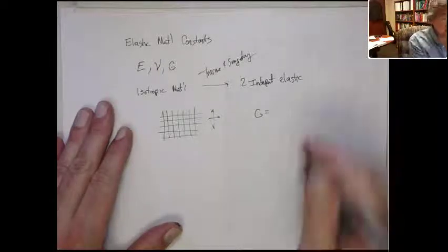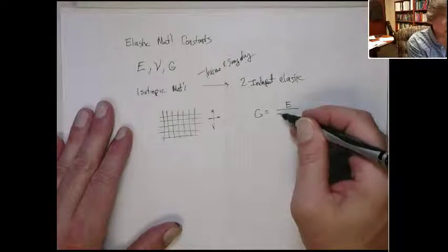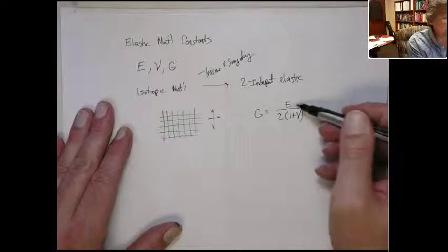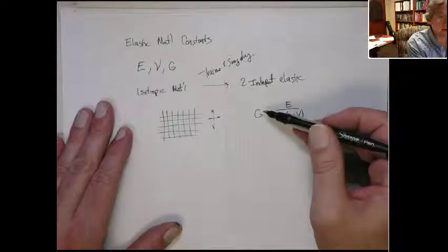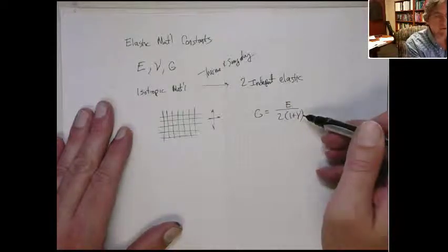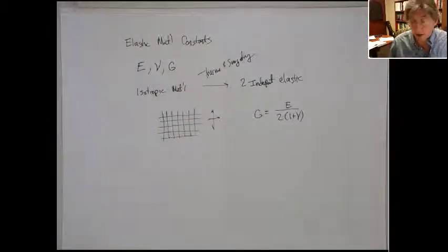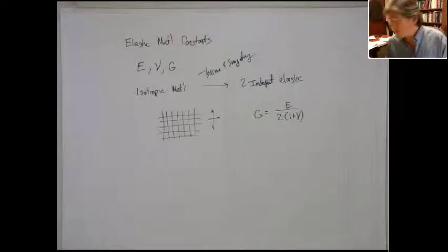Here it is. The shear modulus is related to Young's modulus and Poisson's ratio as follows: G = E/(2(1+nu)). So if you're given Young's modulus and Poisson's ratio, you can solve for shear modulus, or given shear modulus and Young's modulus, you can solve for Poisson's ratio, or Poisson's ratio and shear modulus, you can determine Young's modulus.